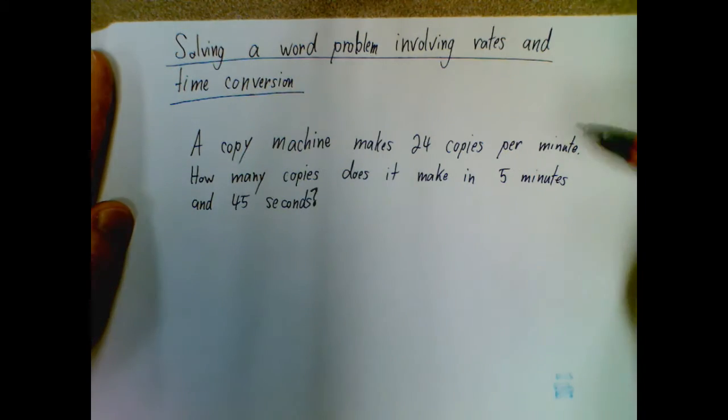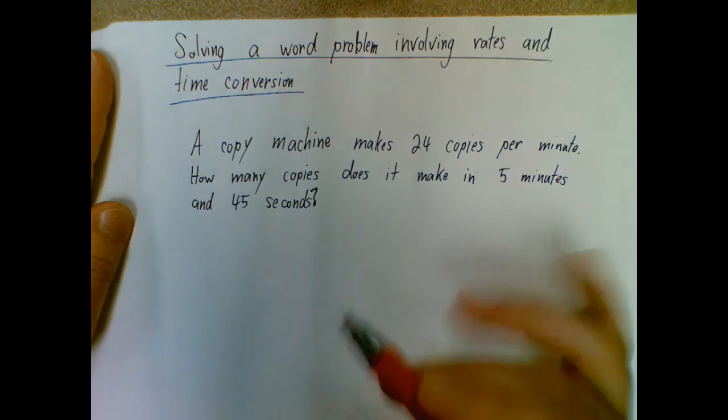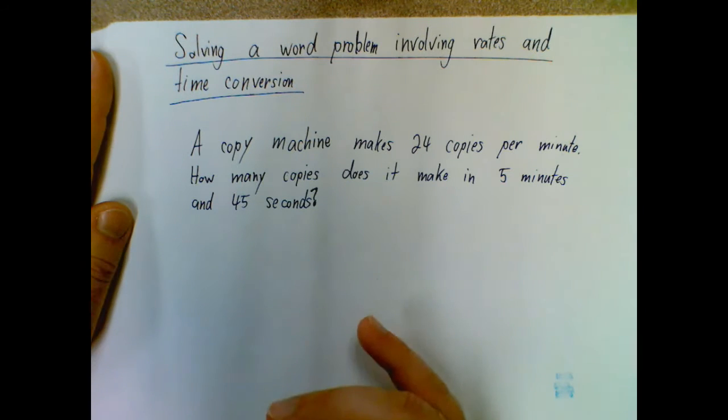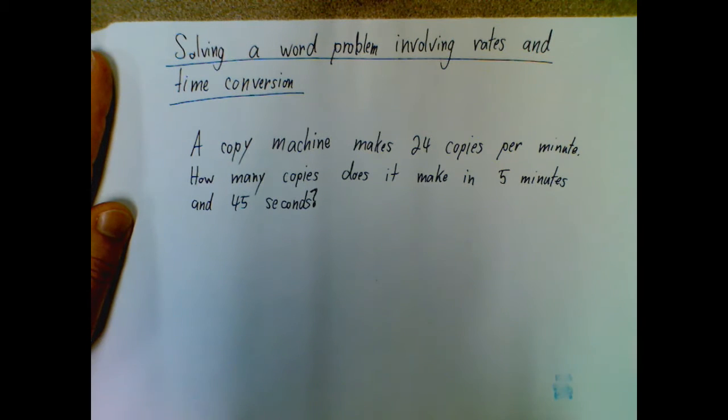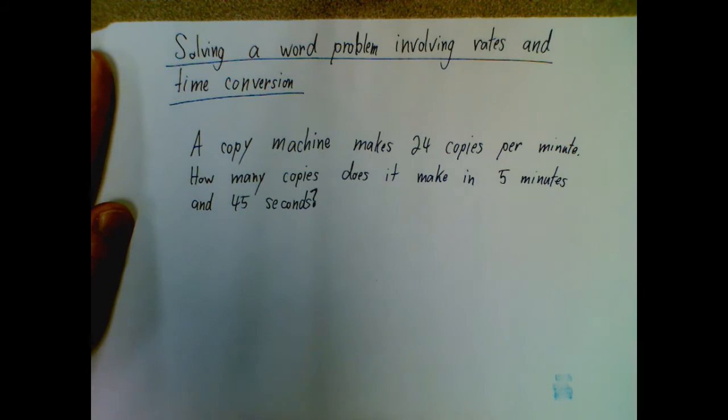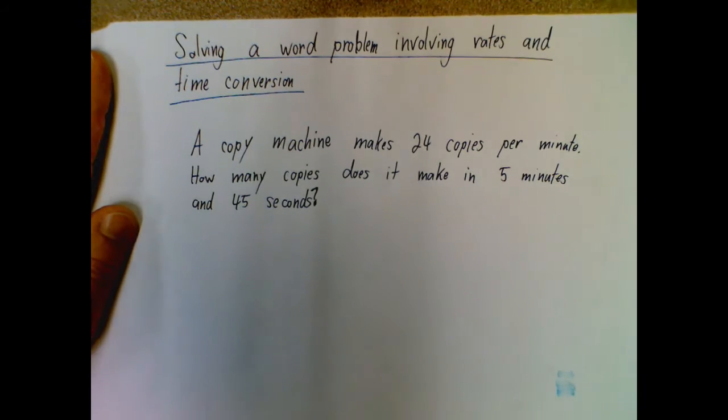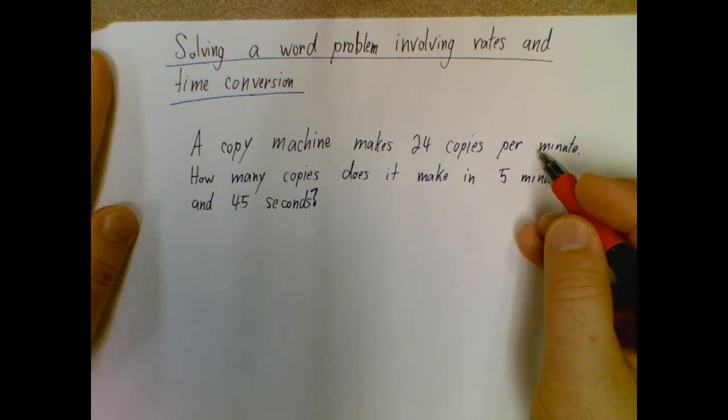Okay. So looking at this, we have 24 copies per minute. You could solve this a couple of different ways. I'm just going to set it up in what I consider kind of the logical fashion as opposed to the equation fashion, but it is up to you. You can even use a dimensional analysis version if you want to do it that way. There's a couple of different things you could do, but we have 24 copies per minute.